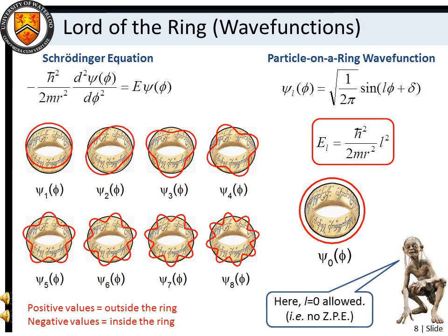Note also that the rotational energy level ladder is described in terms of a rotational quantum number, L. Here, however, a value of L equals zero is allowed, in contrast with our solution to the particle in a box. In other words, there is no zero-point energy for rotation. For the particle in a box problem, the wave function had to join continuously to the zero-probability region outside the box. Thus, n equals zero would imply that there was zero probability inside the box as well. In the case of a particle on a ring, continuity is satisfied as long as the wave function joins smoothly to itself whenever the angle phi is increased by 2 pi. This is possible for L equals zero if the wave function takes a constant value equal to the square root of 1 over 2 pi.